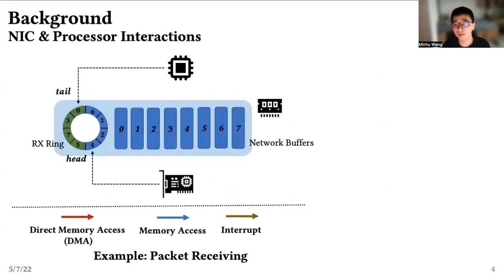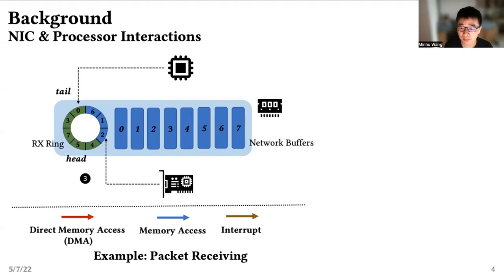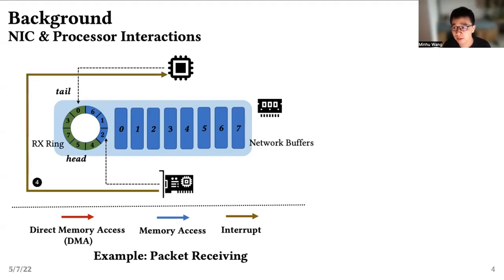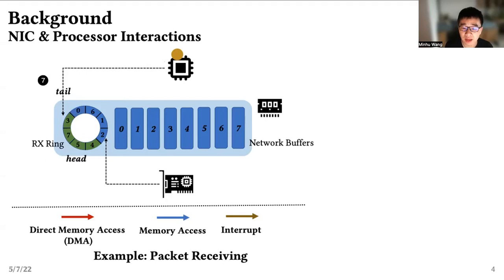As we know, memory is the primary bridge between NIC and processors. Let's introduce how NIC and processor interact using packet receiving as an example. NIC and processor communicate with a ring in the memory. NIC controls the ring head while the processor controls the ring tail. Each item in the ring is a descriptor that maps to a buffer in memory. When a packet arrives, NIC reads the address of the buffer mapped by the ring tail, writes packet data to the buffer, updates the descriptor to show it maps to a received packet, and moves the tail to the next empty entry. It may issue an interrupt to notify the processor of new packets. The processor then reads the descriptor pointed by the ring head, reads packet content from the buffer, maps the descriptor to a new empty buffer, and moves the head to the next entry.